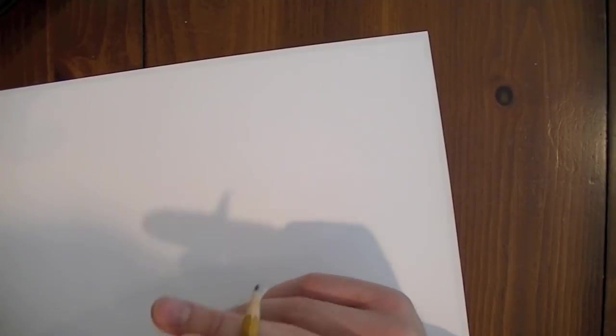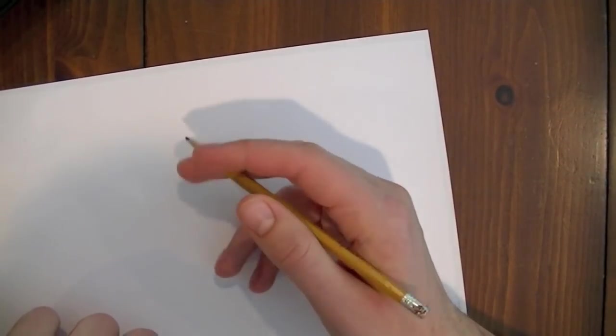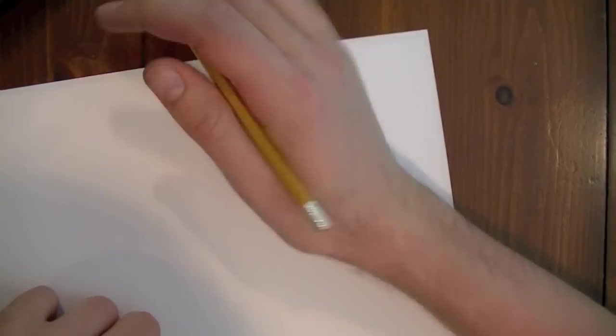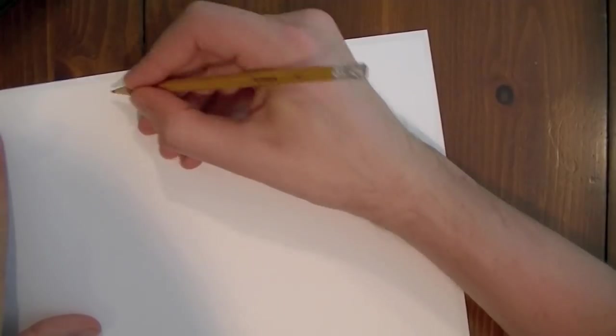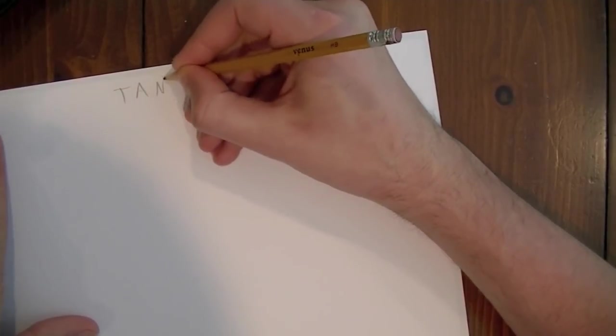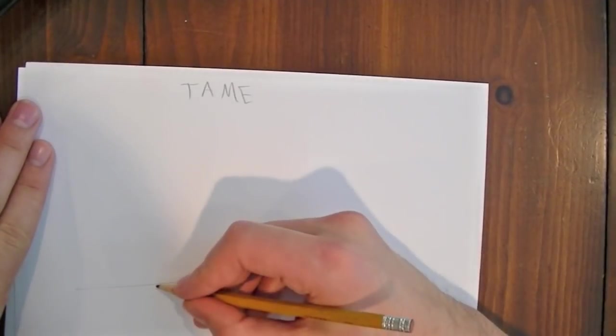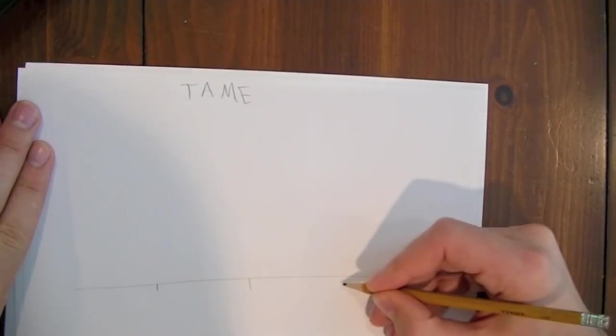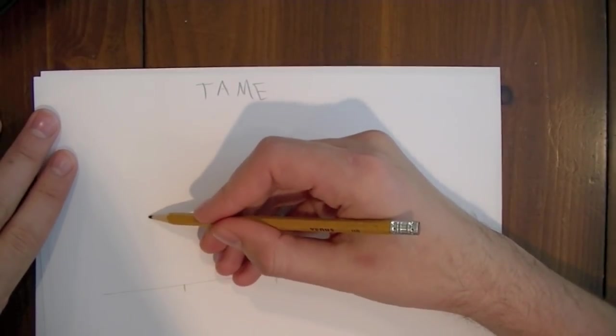So we're going to have to pick a word to write. How about tame? So T-A-M-E. Alright, now basically we want to make sure that the letters are spaced out properly. So let's start out with our T.